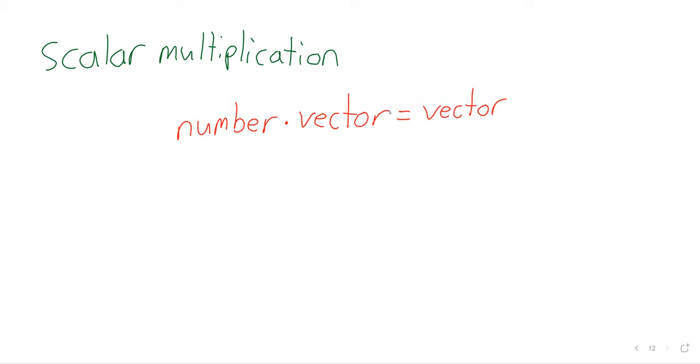Scalar multiplication is a number times a vector, and the result is a vector. Doing this via example, two times the vector [1, 7, -3], we take all of the numbers in that list, all of the entries in the vector, and we multiply them by two: [2, 14, -6].